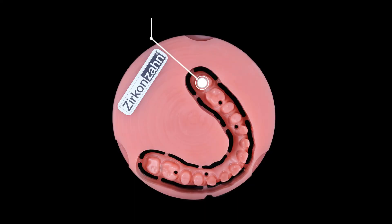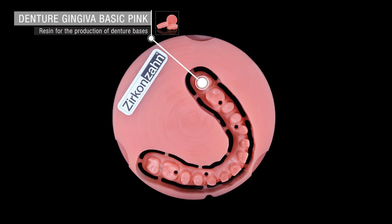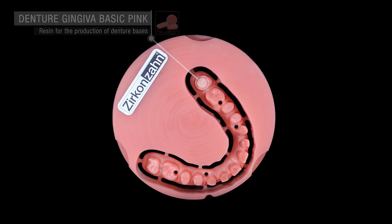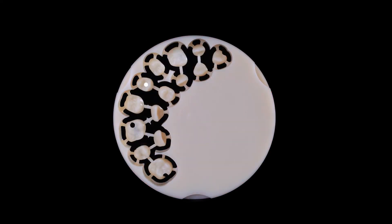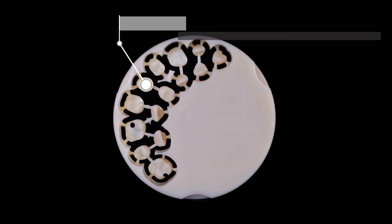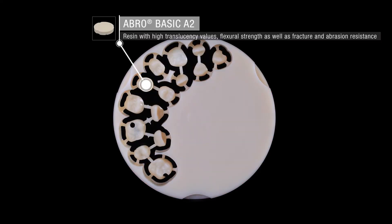The planned restoration consisted of a secondary framework made of denture gingiva basic resin with 14 individual resin crowns made of Abro Basic.